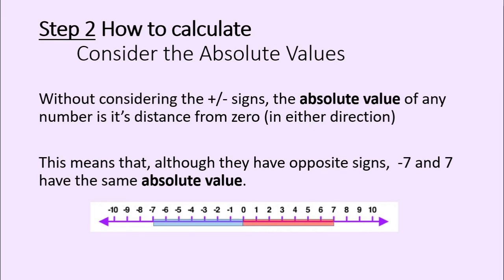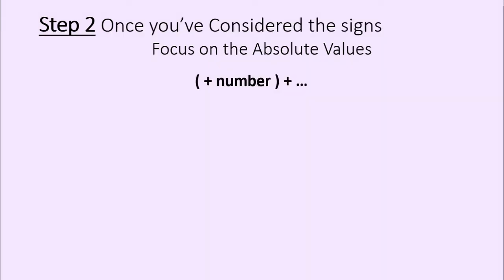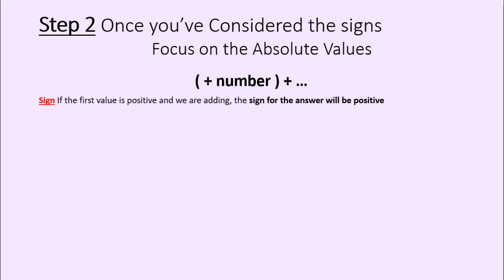Let's consider how to calculate addition or subtraction of positive or negative numbers by focusing on absolute values. First, if you're starting with a positive number and you need to add to that number, you should already be able to decide if your answer will be positive or negative. If you start with a positive and add to it, there's no way the answer is going to end up negative — your answer will always be positive. The next thing is to just add those absolute values, because your answer is going to be more positive.